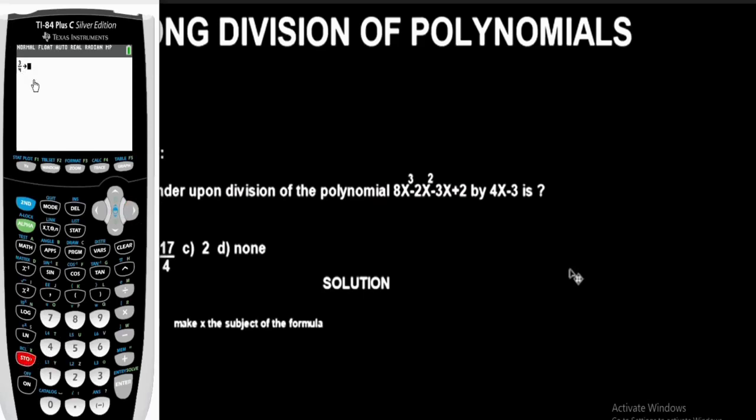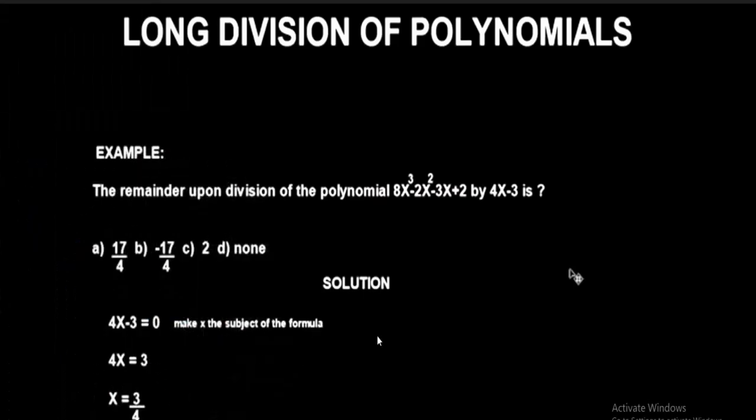Press this Store button. This arrow sign will show you that you are in the right position. You want to store it as x, then press this button for x. Press Enter. So this value 3 over 4 has been stored as x on this calculator. Let's clear this. The next thing we are going to do now is that 3 over 4 has been stored as x. We are going to use it to simplify or evaluate this polynomial value we have here.